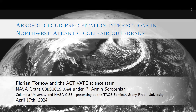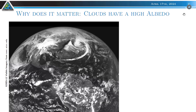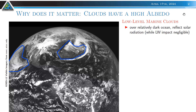Today we talk about cold air outbreaks, mostly seen through the lens of the ACTIVATE campaign. Why cold outbreaks? One obvious reason is that clouds are bright, especially over the ocean where the surface underneath would be dark. You can see two fields of low-level clouds that are particularly bright over the ocean, showing an albedo maximum, then dissipating and showing a lower ability to reflect solar radiation.